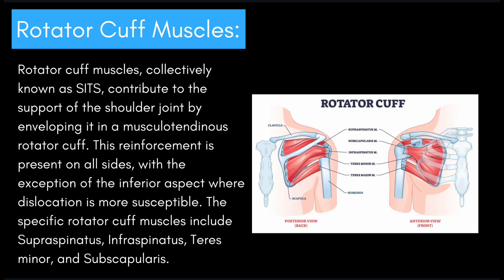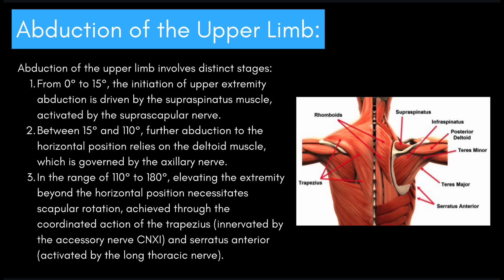Let's go ahead and talk about abduction of the upper limb. Abduction of the upper limb involves distinct stages. From 0 to 15 degrees, the initiation of upper extremity abduction is driven by the supraspinatus muscle, activated by the suprascapular nerve. Between 15 degrees and 110 degrees, further abduction to the horizontal position relies on the deltoid muscle, which is governed by the axillary nerve.